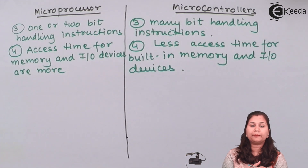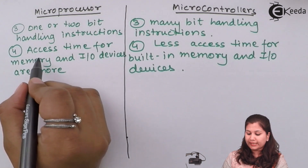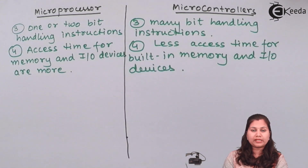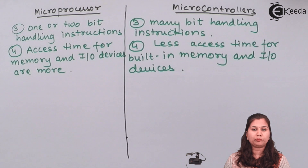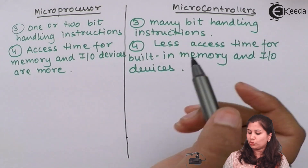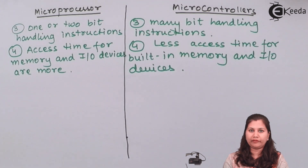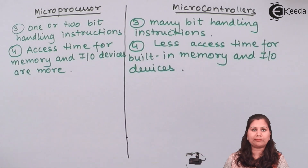Since in microprocessors the memory is outside the chip, external memory is present, so the access time for memory and input-output devices is more. Whenever a microprocessor wants to communicate with memory and input-output devices, more time is taken compared to microcontrollers. Because in microcontrollers, memory and input-output devices are built-in and embedded on the same chip, so less time is taken to access them. Access time is more in microprocessors, whereas in microcontrollers, access time is less.